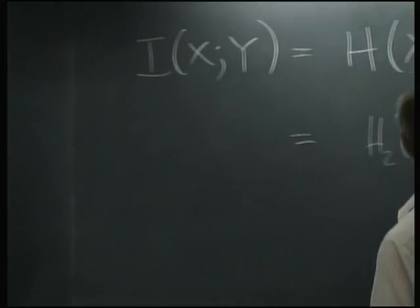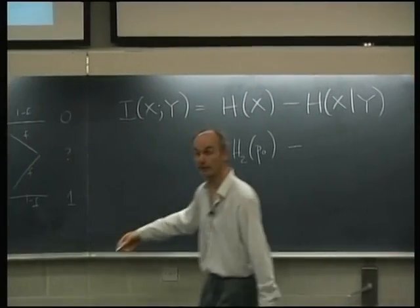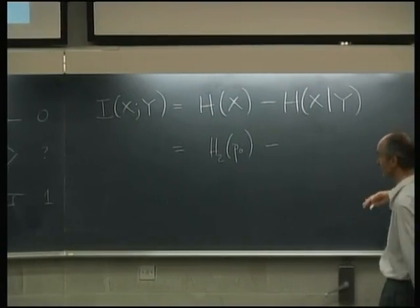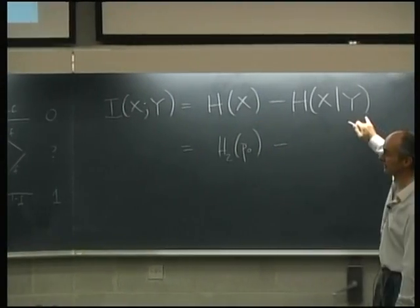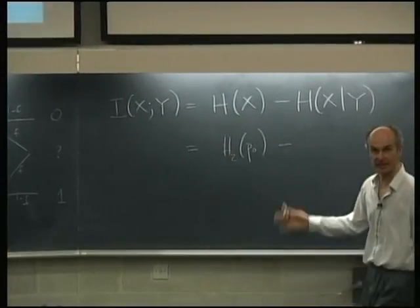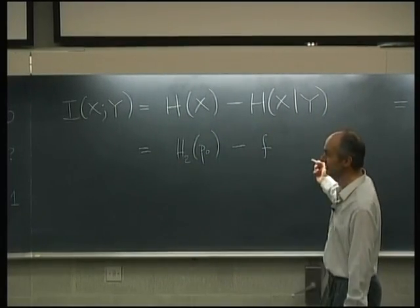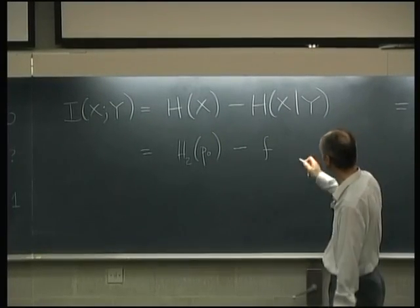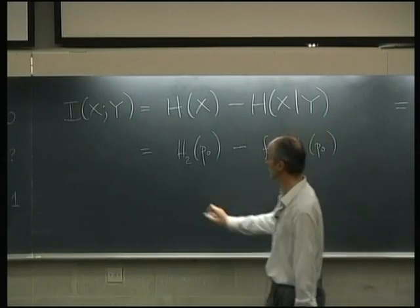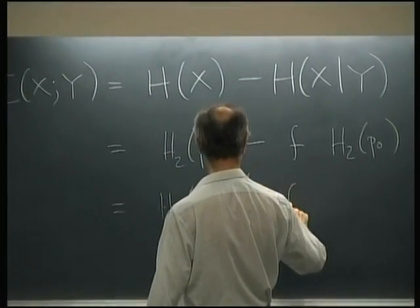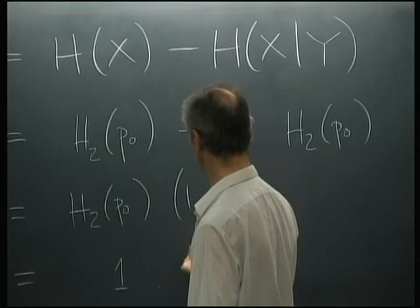If we do it the first way, the first term is the binary entropy of p0, and the second term requires thinking through all the different y's that could happen. We need to figure out how probable they are and work out the entropy of x given y. Almost all of it is easy: if you get a zero you know the input was zero, so there's no entropy. Similarly if the output is a one. It's only if the question mark comes out — which happens with probability f — that you still don't know what the input was. The posterior distribution of the input is still the same as before, so that's H2(p0). Maximizing with respect to p0 gives p0 = 1/2, yielding capacity 1 minus f.